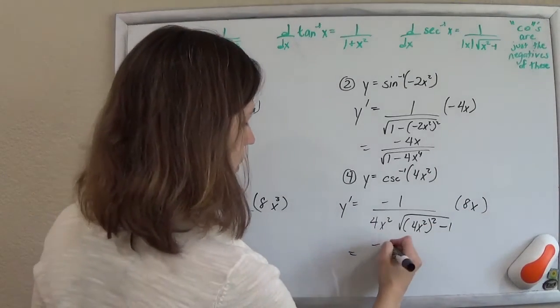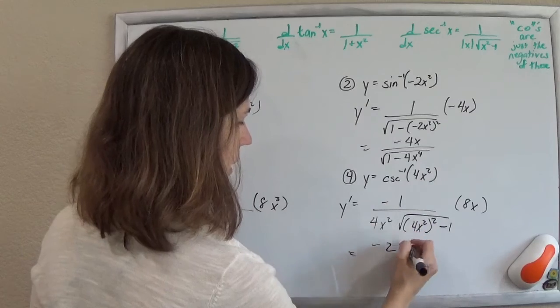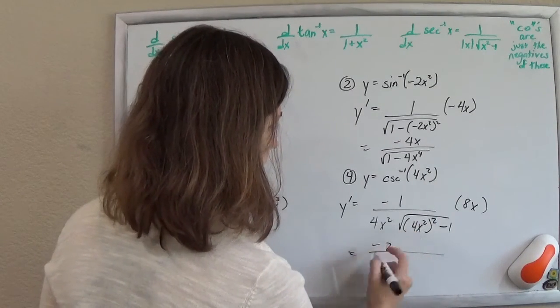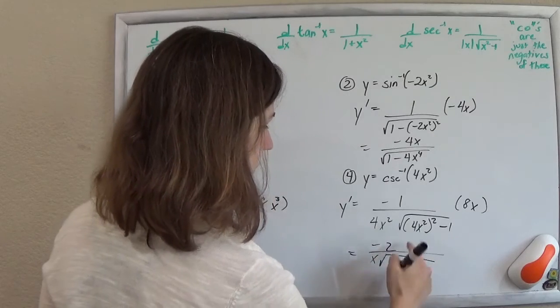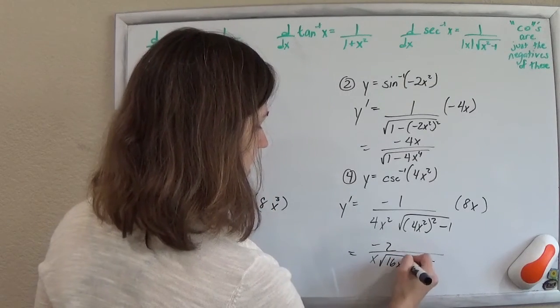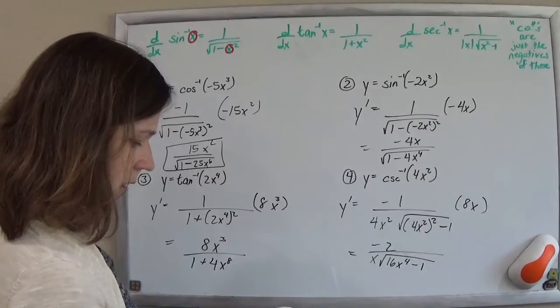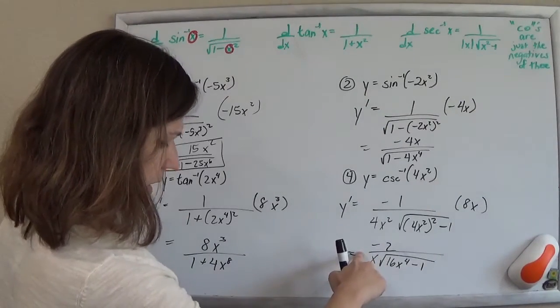Cleaning this up. 8 divided by 4 is 2. Kept that negative there. x on the top will cancel with one of those x's on the bottom. So I'll still have an x on the bottom. Then I'll have 16x to the fourth minus 1.